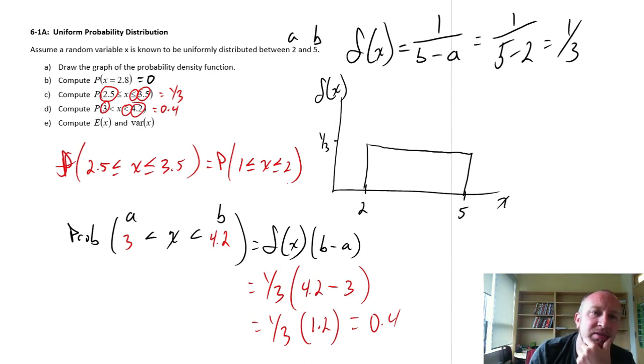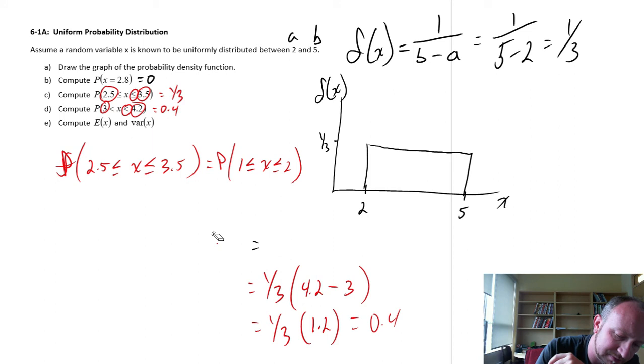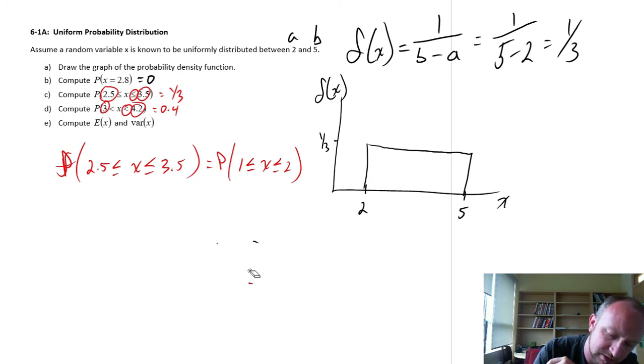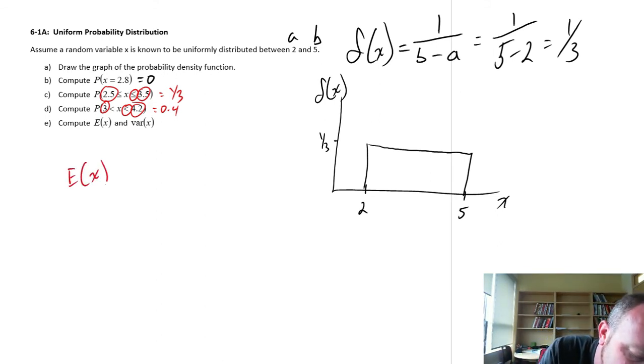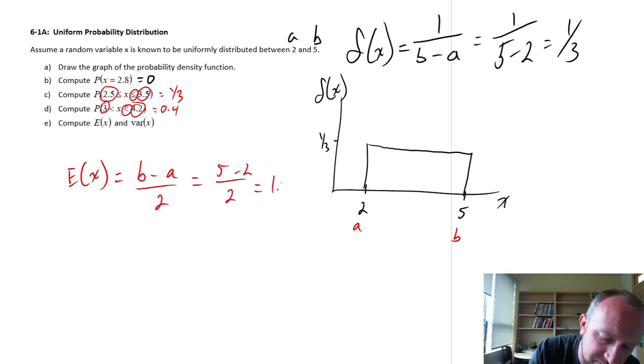Part E, compute the expected value. These formulas, their derivation is actually a little bit beyond the scope of the course, surprisingly enough. They look quite simple, but to derive them is a little bit more tedious. The expected value is just b minus a over 2, where here's our b in this case and here's our a. So this is just going to be 5 minus 2 over 2, so that's 3 over 2. So that'll be a value of 1.5 for the expected value.